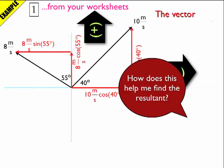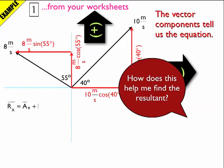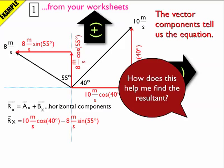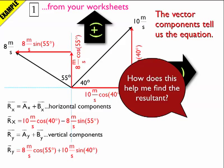So how does all this help me find the resultant? The vector components give us the equations. The components in the x direction give me rx: that's 10 meters per second times cosine 40 degrees minus 8 meters per second times sine 55 degrees. Minus, because the 8 meters per second sine 55 component goes to the left. Vertically, I do the same with the vertical pieces: 8 meters per second times cosine 55 going up, plus 10 meters per second times sine 40 degrees going up. They both go up, so I just add them.